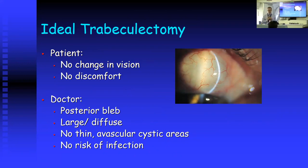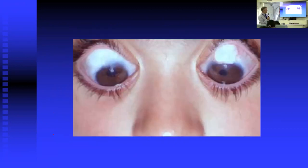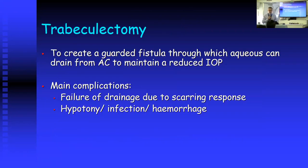An ideal trabeculectomy is one where the patient experiences no change in vision and no discomfort. An ideal trabeculectomy for the doctor is where we have posterior drainage, a large diffuse bleb, and no risk of infection. What we want to go from is having elevated, uncomfortable, cystic blebs to one where you can hardly see the bleb because it's large and diffuse with very little risk of infection.